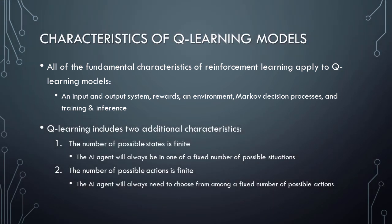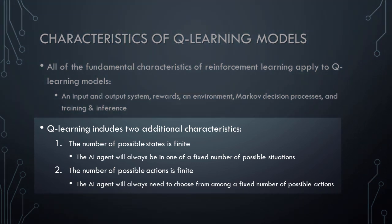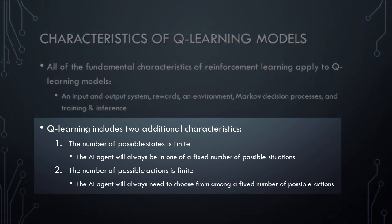In addition to these five fundamental characteristics of all reinforcement learning models, Q-Learning models also include two additional characteristics. First, the number of possible states in Q-Learning models is finite — the AI agent will therefore always be in one of a fixed number of possible situations. Second, the number of possible actions in Q-Learning models is also finite, and the AI agent will therefore always need to choose what to do next from among a fixed number of possible actions.